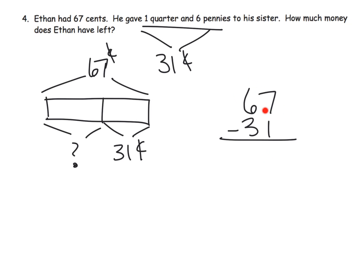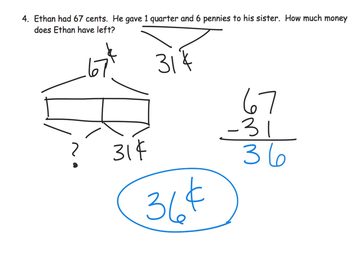Going over here and subtracting using the stacked method: seven ones minus one one is six ones left over. And then six tens take away three tens gives us three tens. So our answer is 36 cents — that is how much money Ethan has left over.